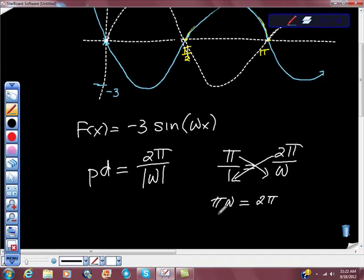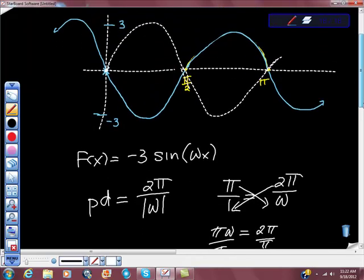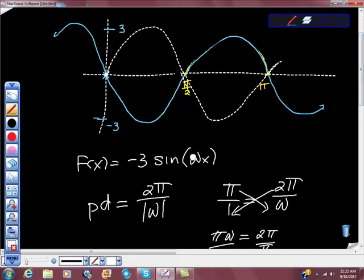From here, we're trying to get omega by itself, so we're going to divide both sides by pi. And we get omega equals 2. So I think that works out good. So we go back. Now we're going to just finish this and fill this in and get 2x.